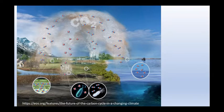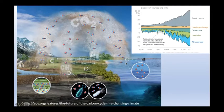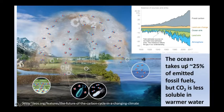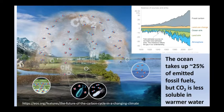Methane is a really key greenhouse gas — I'll come back to it in the context of the Arctic. Methane is emitted by anaerobic decomposition, whereas CO2 is emitted in the presence of oxygen. One key process is ocean exchange: a lot of the CO2 emitted into the atmosphere is actually taken up by the land and by the ocean. The ocean takes up about 25% of emitted fossil fuel CO2. However, CO2 is less soluble in warm water, so as the oceans warm, they'll be able to absorb less CO2, meaning more remains in the atmosphere to drive further warming.